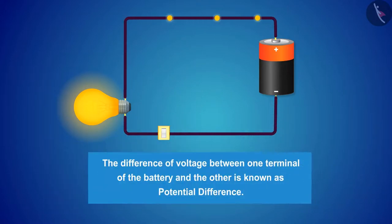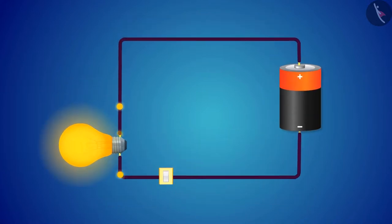The difference of voltage between one terminal of the battery and the other terminal is called potential difference. We get the potential difference due to various chemical reactions and conditions of the battery.